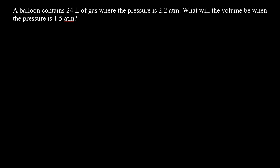Example 1: A balloon contains 24 liters of gas at a pressure of 2.2 atm. What will the volume be when the pressure is 1.5 atm? So the initial volume v1 is 24 liters, the initial pressure p1 is 2.2 atm, and the final pressure p2 is 1.5 atm.